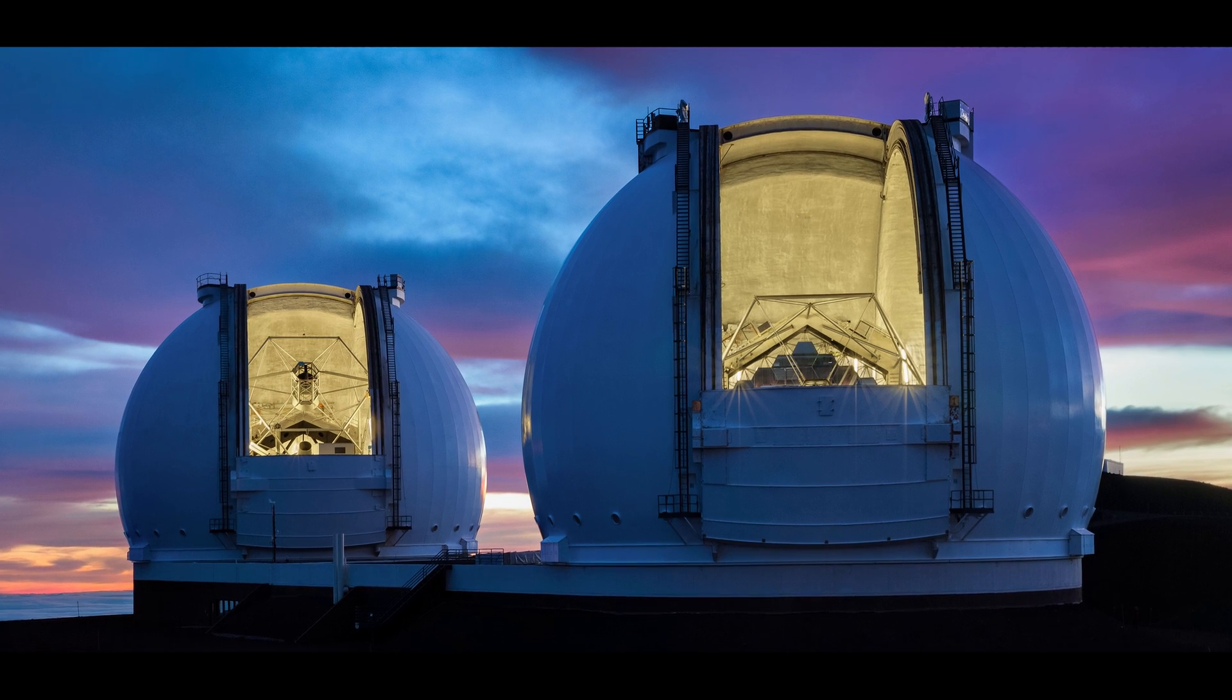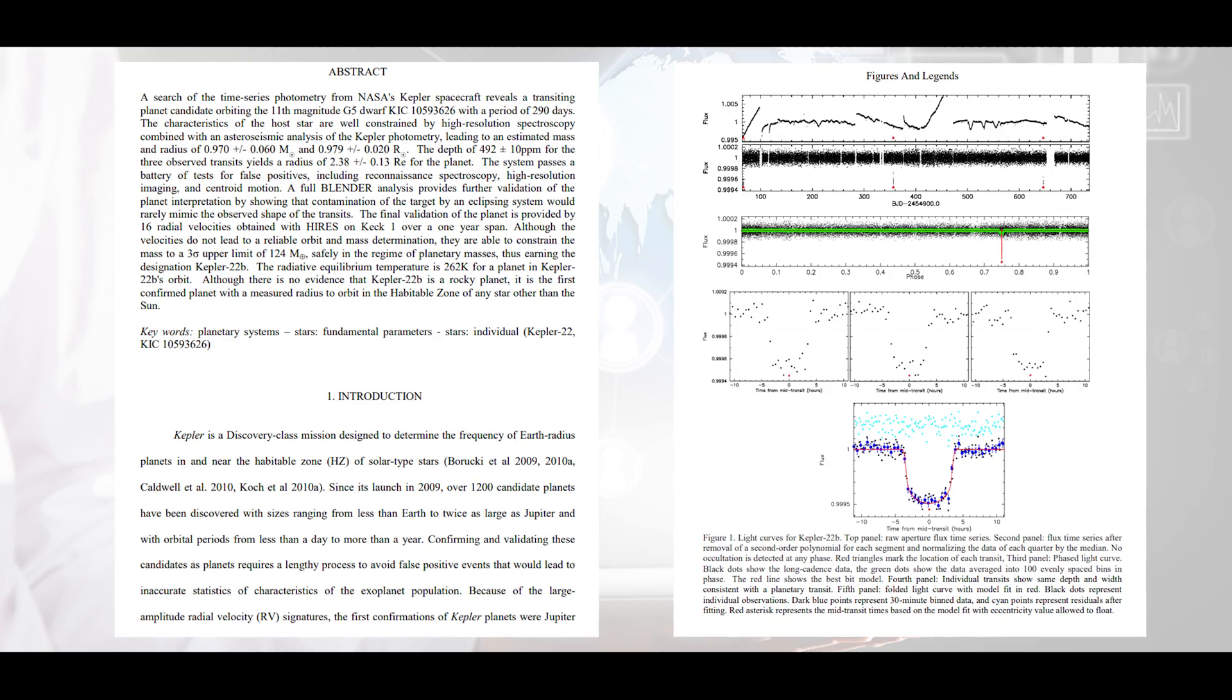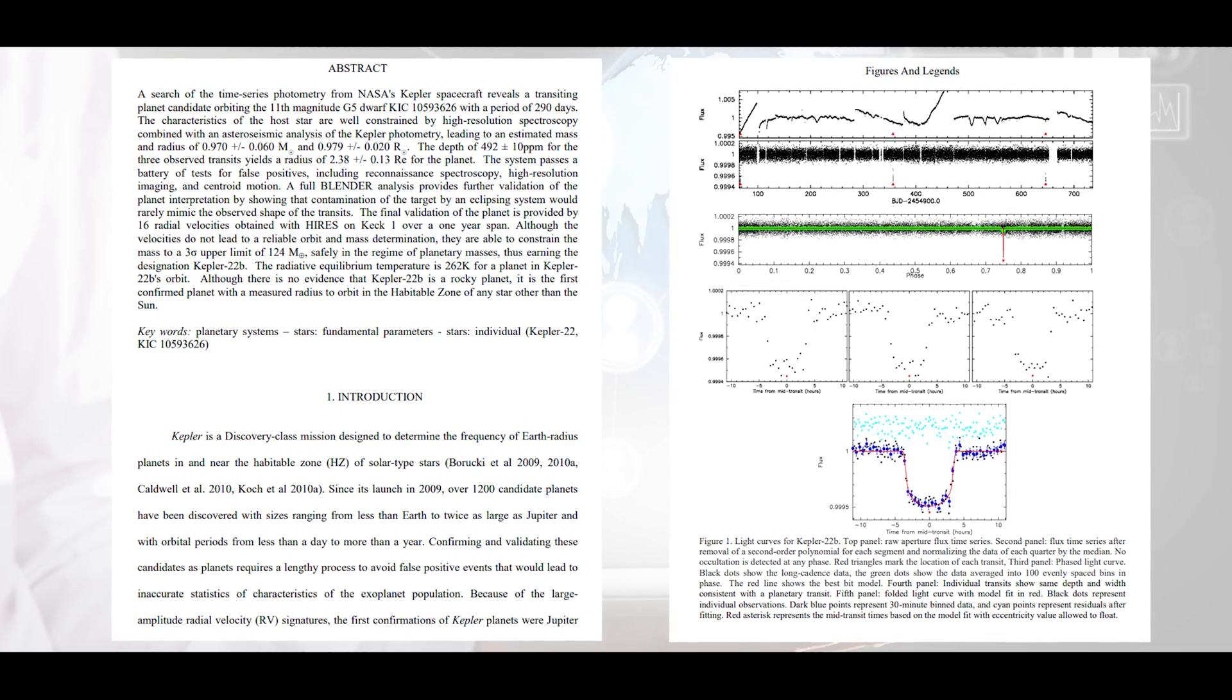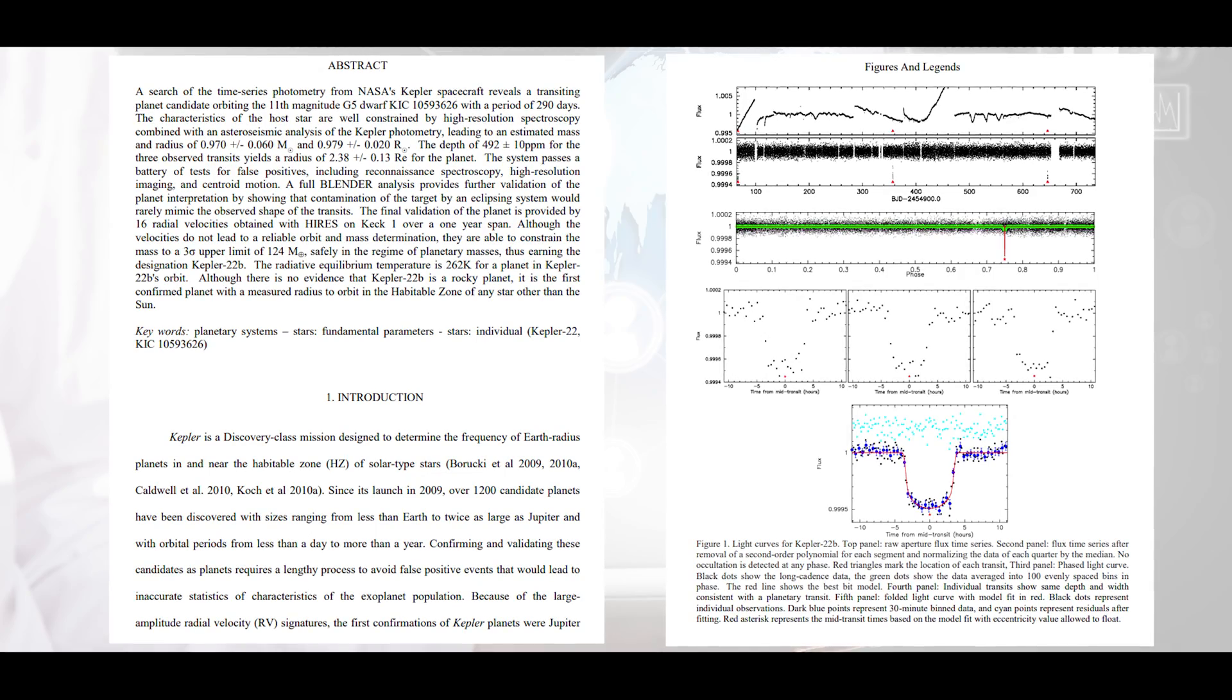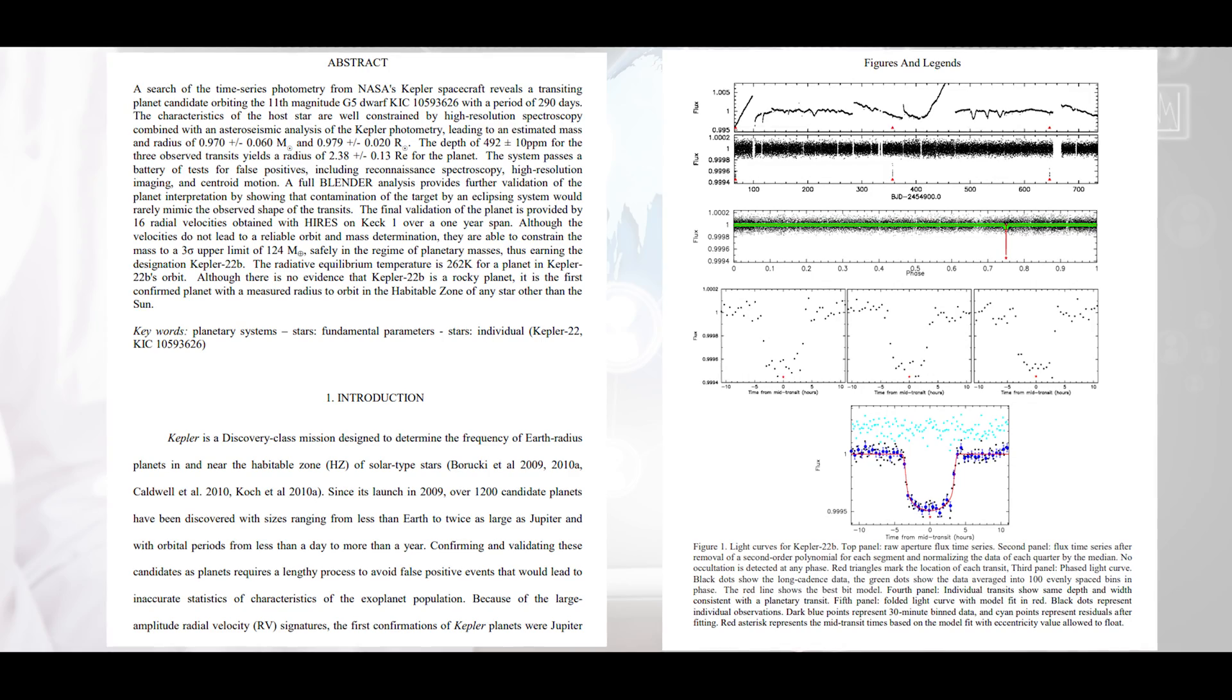This discovery was confirmed by the Spitzer Space Telescope and the Keck Observatory. The planet needs 290 days for one orbit around the star KIC 10593626, which belongs to the spectral type G5 and therefore has similar properties to our Sun, even if it's a bit smaller and cooler.